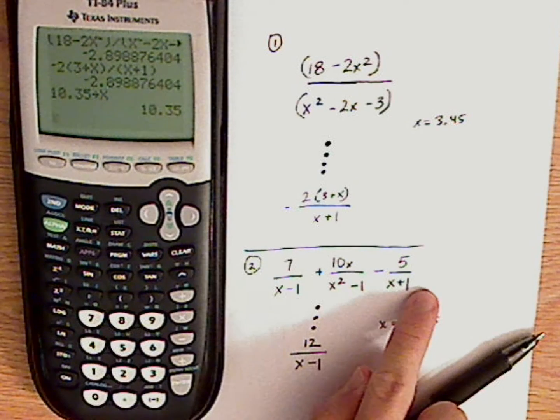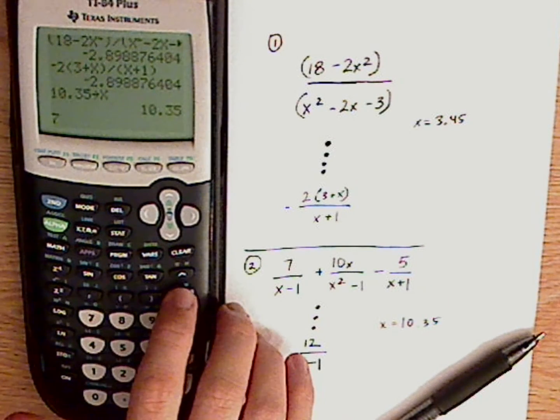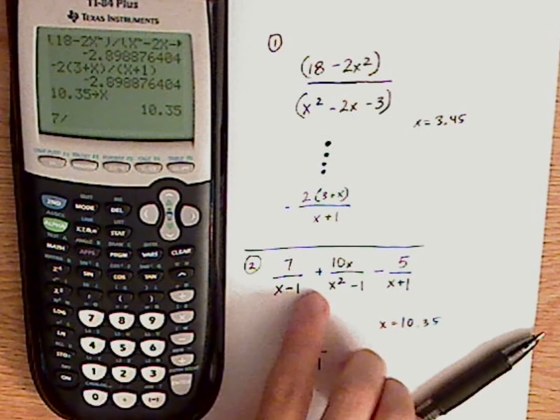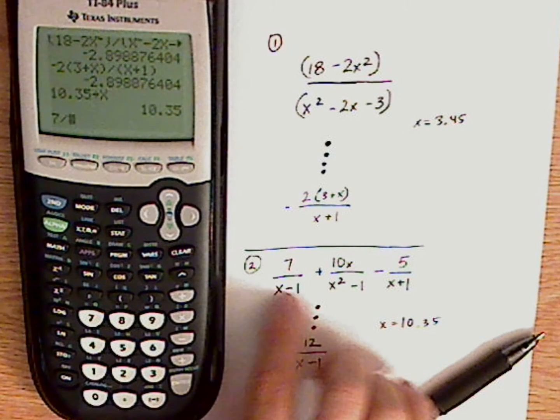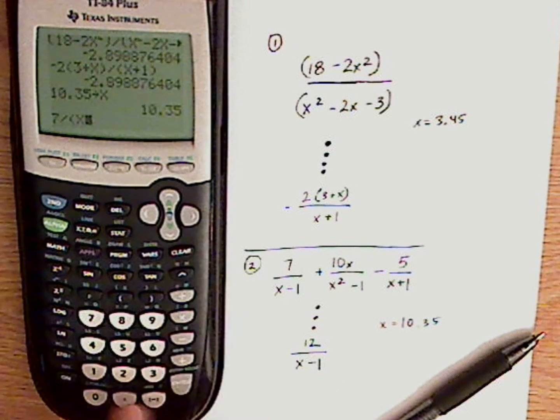Now I want to type each of these all together. So it's 7 divided by, and again, I have to put this in the denominator. So I need parentheses around the whole thing. If you do not put parentheses,